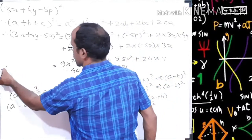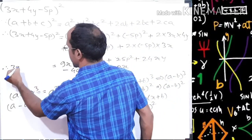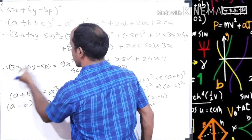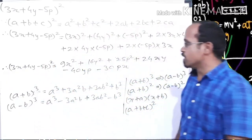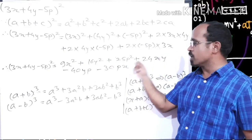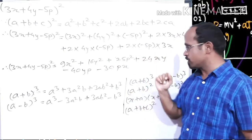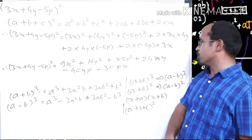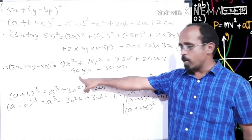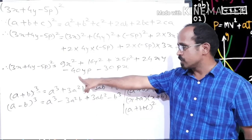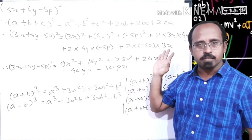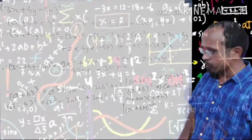Therefore, (3x + 4y − 5p)² = 9x² + 16y² + 25p² + 24xy − 40yp − 30px. Thank you very much.